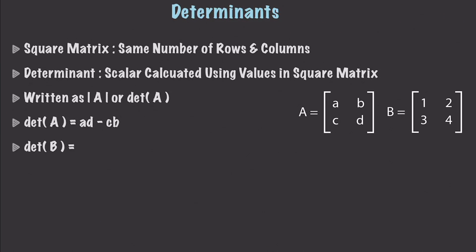The very first thing I want to talk about before we talk about determinants is square matrices. A square matrix is just a matrix that has the same number of rows as well as columns. Both of the matrices you see right here are square matrices. Now a determinant is just a scalar value that is calculated using the values in a square matrix — they must be a square matrix, or you cannot find a determinant.